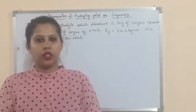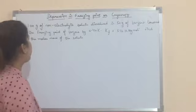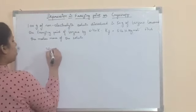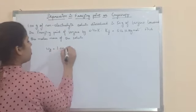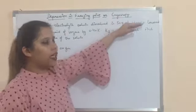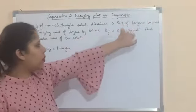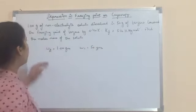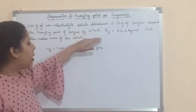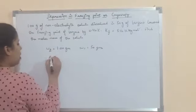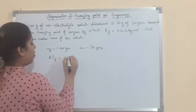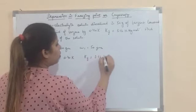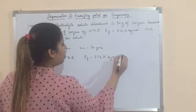Now let's look at a numerical related to depression in freezing point. The question: 1 gram of a non-electrolyte solute (W₂ = 1.00 g) is dissolved in 50 grams of benzene (W₁ = 50 g). It lowers the freezing point of benzene by 0.40 K, so ΔTf = 0.40 K, and Kf is given as 5.12 K·kg·mol⁻¹. We have to find the molar mass of the solute.